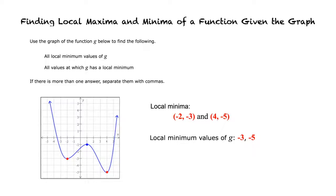A value at which g has a local minimum is the x-coordinate of a point on the graph where there is a local minimum. So the values at which g has a local minimum are x equals negative 2 and x equals 4.